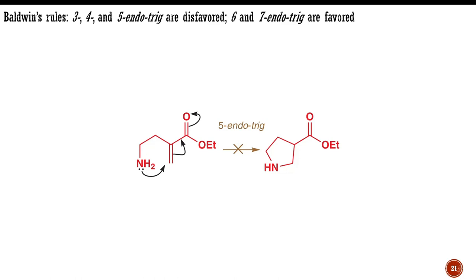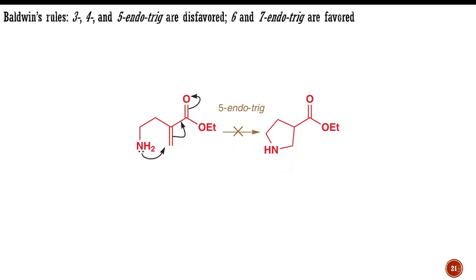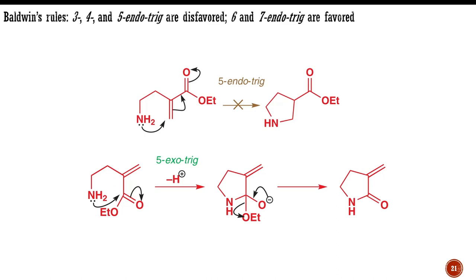The reason we say this is that 5-endo-trigonal cyclizations are reactions that look perfectly fine on paper, and at first sight it seems quite surprising that they won't work. This intramolecular conjugate addition, for example, appears to be a reasonable way of making a substituted pyrrolidine. But this reaction does not happen. Instead, the amine attacks the carbonyl group in a favored 5-exo-trigonal cyclization.